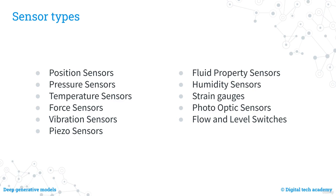There are various types of sensors depending on the original energy domain of the signal, including position sensors, pressure sensors, and temperature sensors. A pressure sensor converts mechanical pressure energy into an electrical signal. A temperature sensor converts thermal energy into an electrical signal. Now let's examine some specific sensor examples.